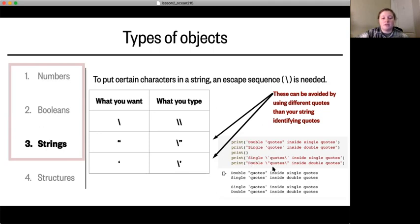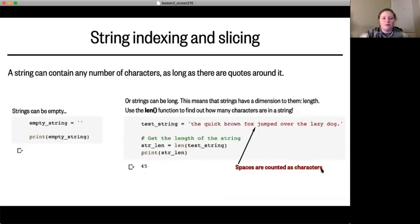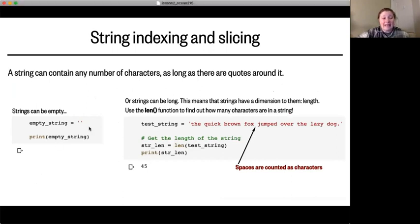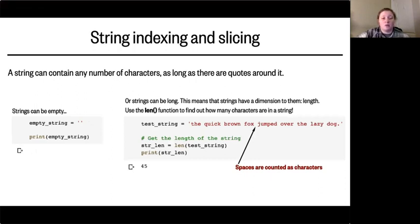This is necessary because without it, Python thinks you're trying to end your string when you put a quote in, and it will throw an error. A string can contain any number of characters as long as there are quotes around it, which means a string can be completely empty — just two quotes with nothing in between. It doesn't print anything, but it is still a string because it has a beginning and an end quote.